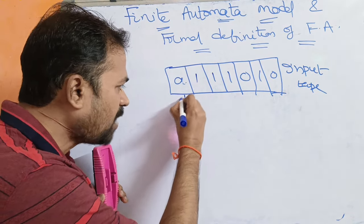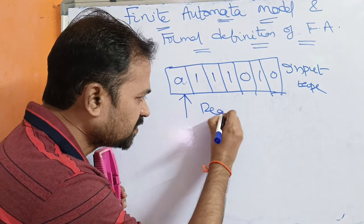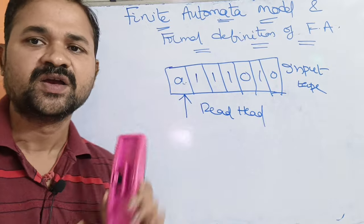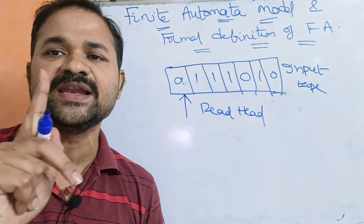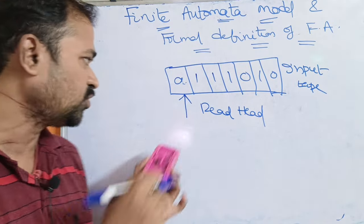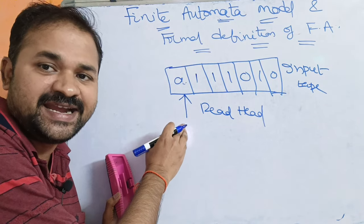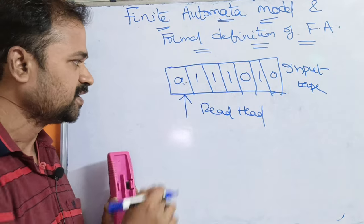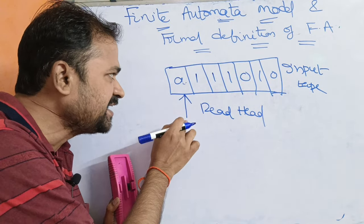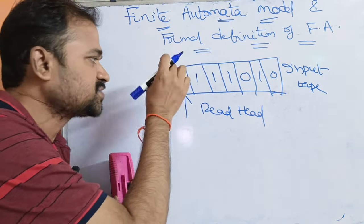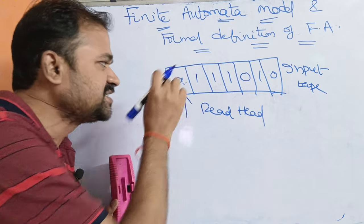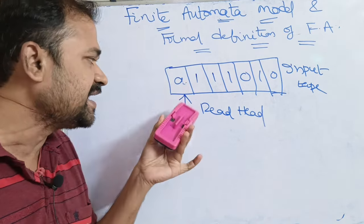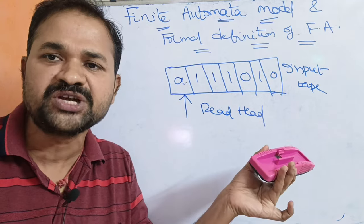The second component is the read head. By using the read head, we can read one symbol at a time. Initially, the read head points to the first symbol of the input string, which is zero.